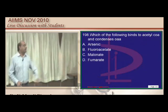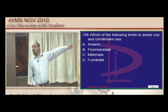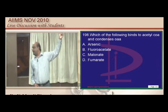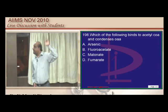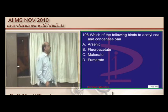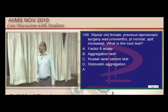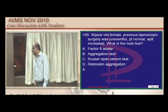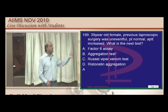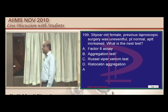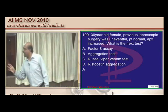Acetyl CoA condenses with oxaloacetate, and this condensation is inhibited by a specific inhibitor. A 39-year-old with prolonged aPTT favors hemophilia, so factor 8 assay is indicated. Aggregation tests such as ristocetin aggregation are used for platelet dysfunction disorders.